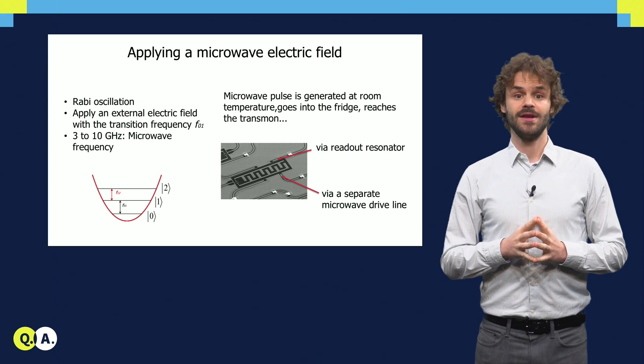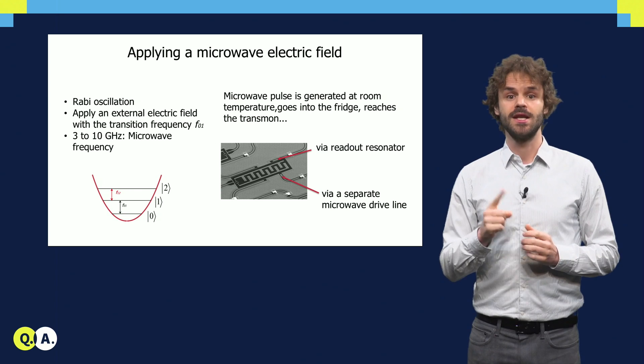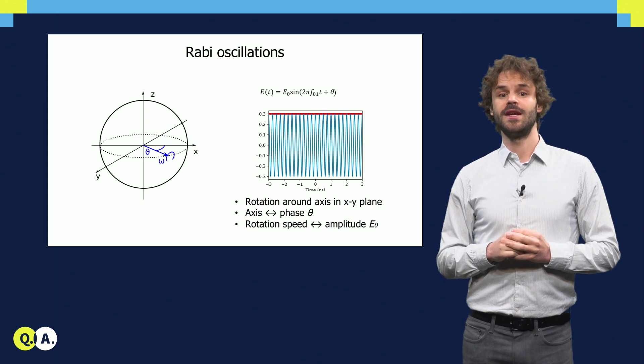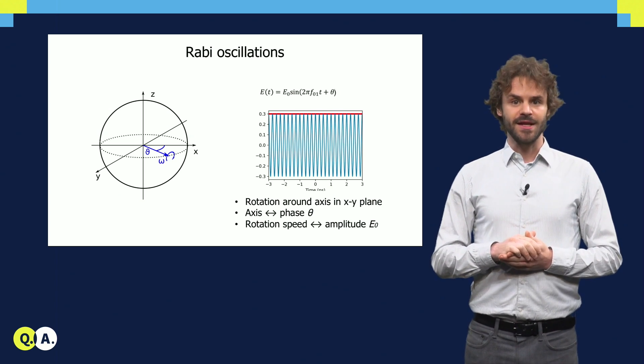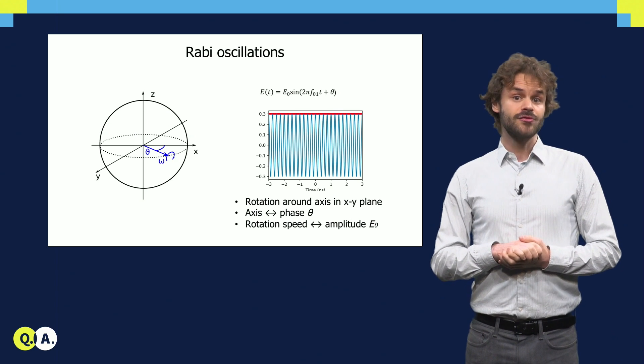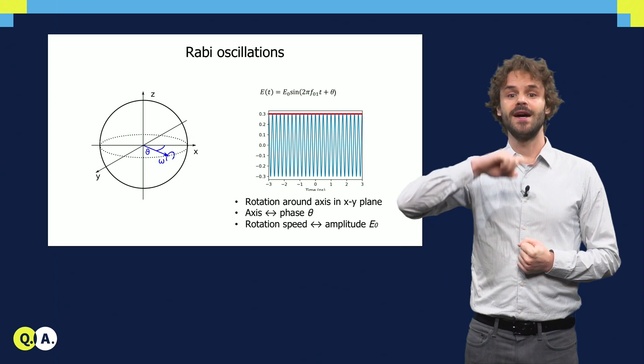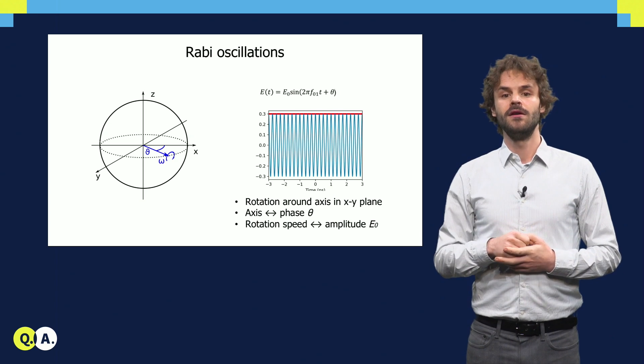With this, we can generate the electric field close to only one selected qubit. Let's see how the oscillating field affects the qubit state. When we apply it, it drives the qubit from the ground to the excited state and back.